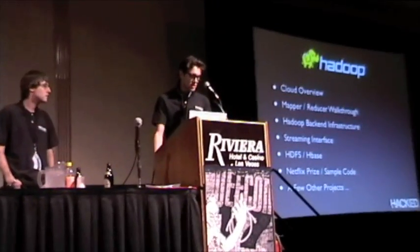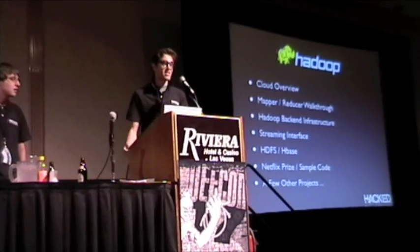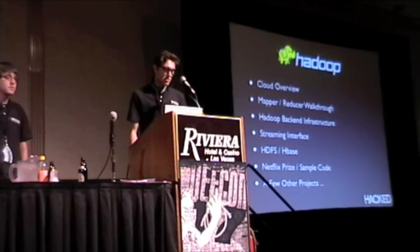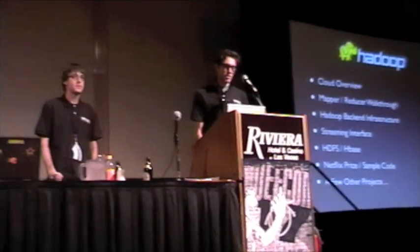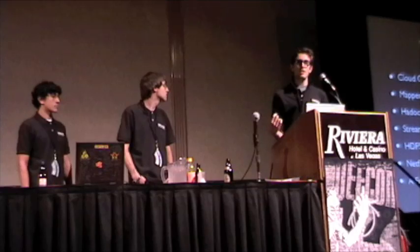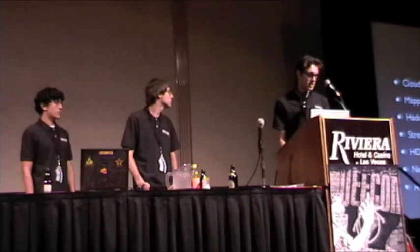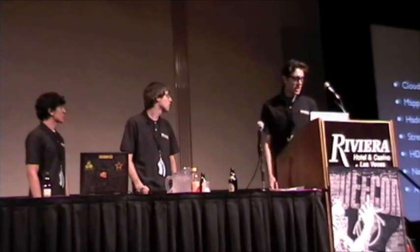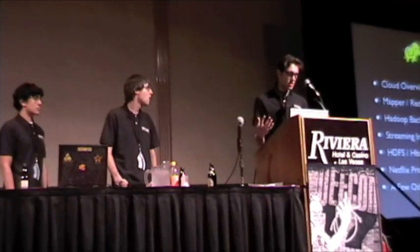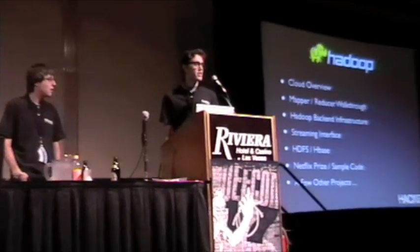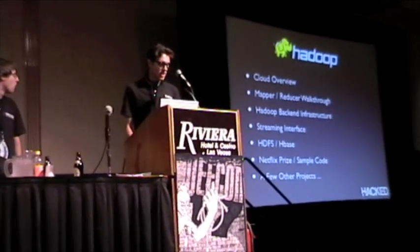We're going to give you a brief overview of clouds — definitions, what they do, things of that nature. Then a MapReduce walkthrough: what a mapper is, what a reducer is, what they're doing, and how we're utilizing them. A little bit about Hadoop's backend infrastructure like the master nodes, job tracker, distributed cache, and things of that nature.